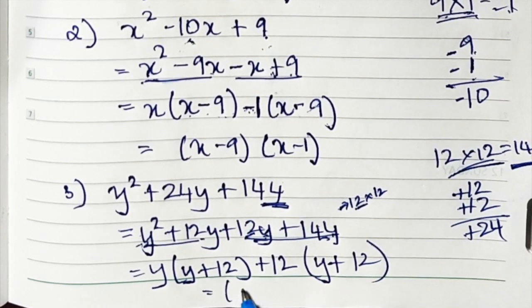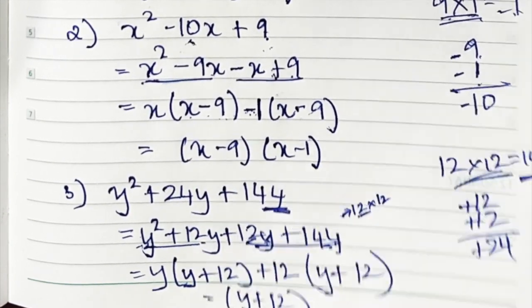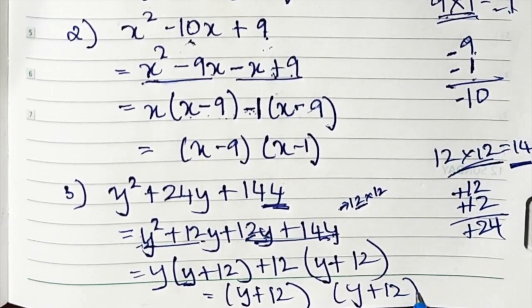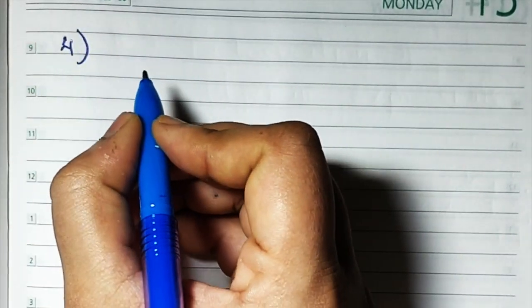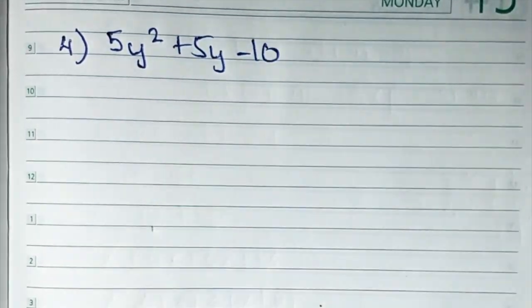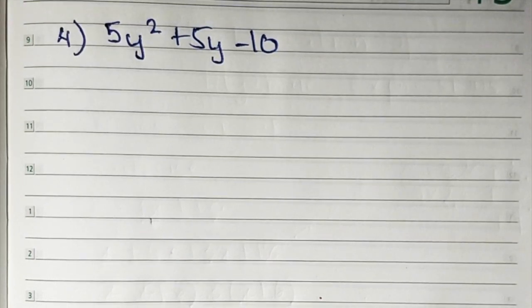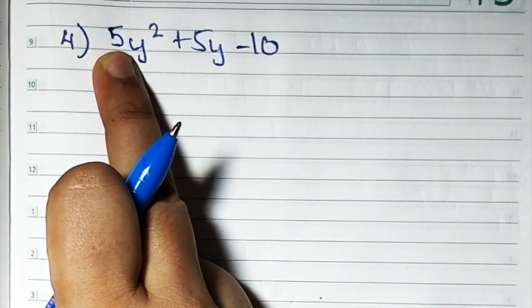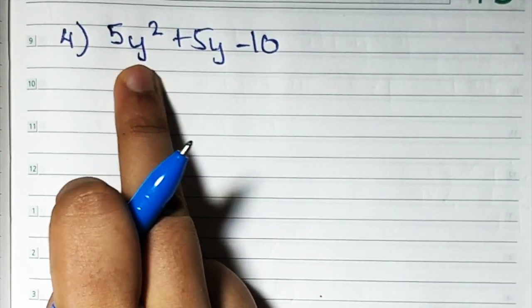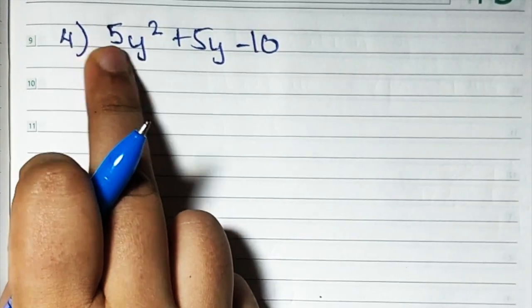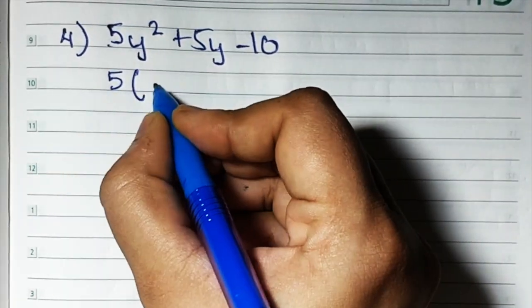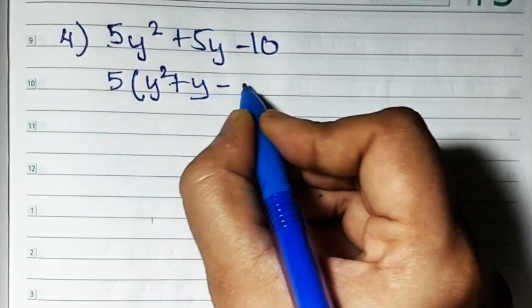So one bracket will have y plus 12, and the other bracket has those terms which are outside, that is y plus 12. So the answer is (y+12)(y+12). Sum number 4 says 5y squared plus 5y minus 10. Now here, what you do is take 5 common outside. Usually the first term was only the variable — you didn't have the coefficient for the first three sums — but now we have the coefficient 5. So we take 5 common. What remains inside? y squared plus y minus 2.